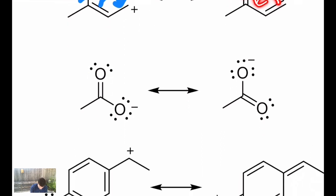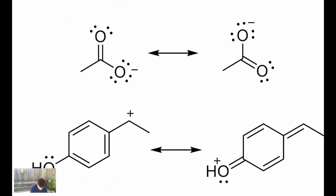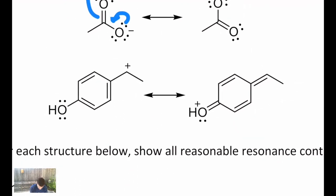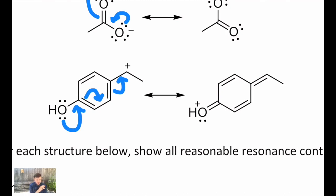Below that, this is the acetate ion. I have a lone pair on the lower right oxygen becoming a pi bond, and then the carbon-oxygen pi bond becomes one of those lone pairs. The last one in this column has quite a few electron changes: one of the lone pairs on the oxygen becomes a shared pair, the carbon-carbon pi bond in the lower left becomes a carbon-carbon pi bond in the lower right, and then the carbon-carbon pi bond on the right becomes a carbon-carbon pi bond in the upper right. As a result, there's no longer a plus charge on the carbon — it's now on the oxygen. This particular example has many other resonance contributors that we sort of skipped over.